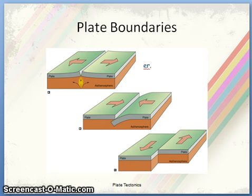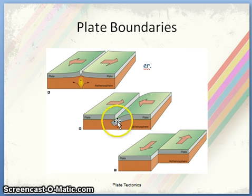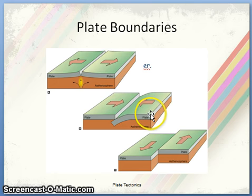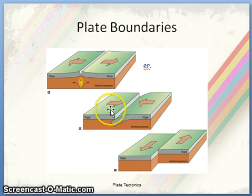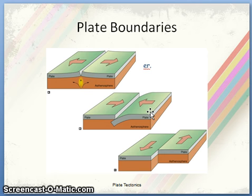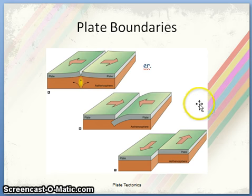Here are images for these different types of plate boundaries. Part A shows divergent plate boundaries, where two plates move apart from each other. Part B shows convergent plate boundaries, where one plate is subducting beneath the other, which is called the overriding plate. Part C shows the transform plate boundary, where two plates slide past each other in opposite directions.